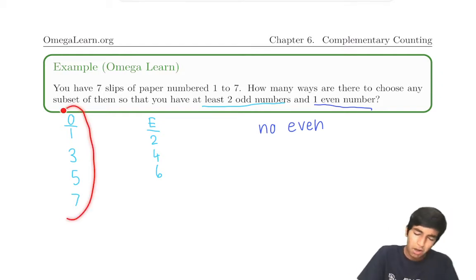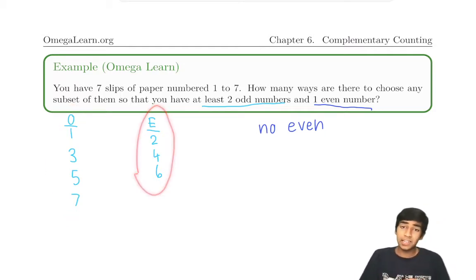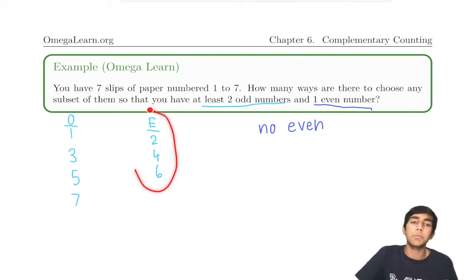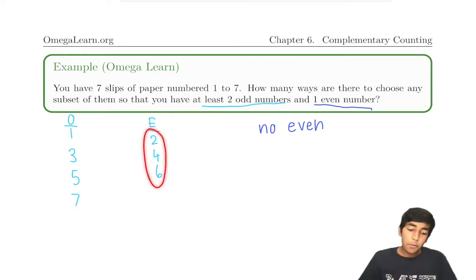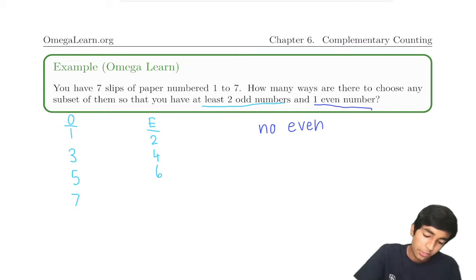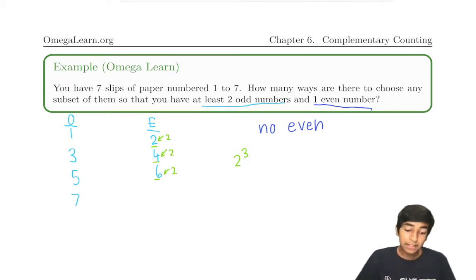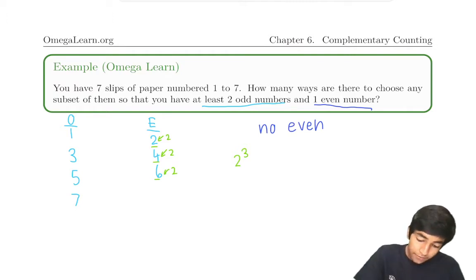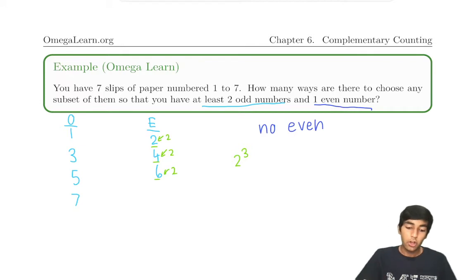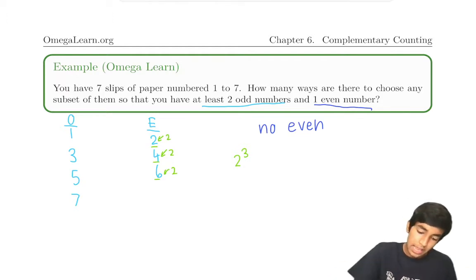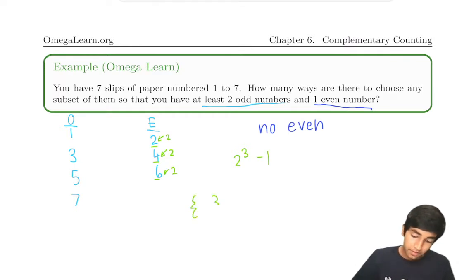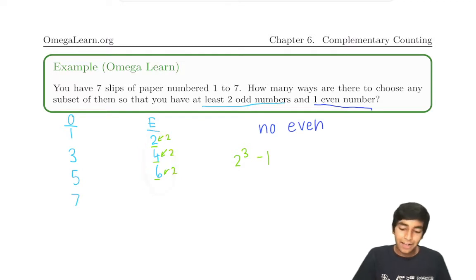We've got two sub-problems here: the odd numbers and the even numbers. Let's focus on the even numbers for now. How many subsets of just the even numbers? Well, we've got three elements, so just two cubed total subsets, because there are two choices for whether each element stays in the set or not. That's the total number of subsets of the even numbers. Now, how many subsets have no even numbers in them — basically nothing? That's just one: the empty set. So two cubed minus one. All subsets of {2, 4, 6} except the empty set have at least one even number.